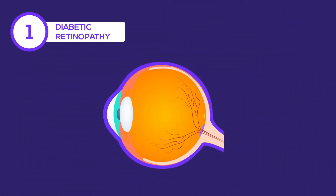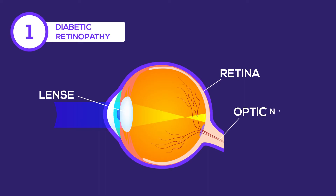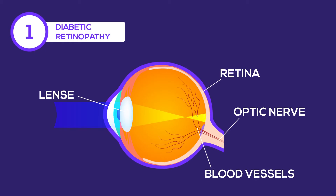Diabetic retinopathy. Light enters the eyes through the pupils, travels across the lens, and lands on the retina. The retina has receptors that convert light waves into electric signals. The optic nerve carries these signals to the brain to create images. The retina has a rich blood supply to support this complex task. When you have diabetes for a long period, it can damage these blood vessels and cause defects in the retina. This condition is called diabetic retinopathy.